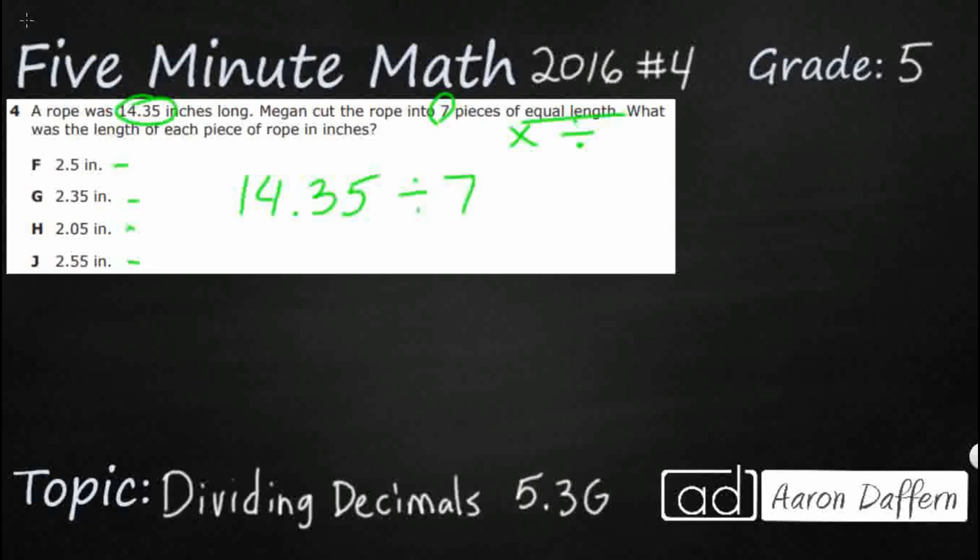So how do we divide when we have a decimal in our dividend? Well, let's first estimate to the nearest whole number because we know what whole number decimal division looks like. We are going to look at that 3 and that 3 is not going to change that 4 up because it is going to make it round down to 14. So that is a whole number, 14 divided by 7, that gives us 2. It doesn't help us a whole lot. Except I am wondering if maybe we can kind of eliminate 2.5 and 2.55. Those are seeming just a little bit big. I am thinking it is either going to be G or H.